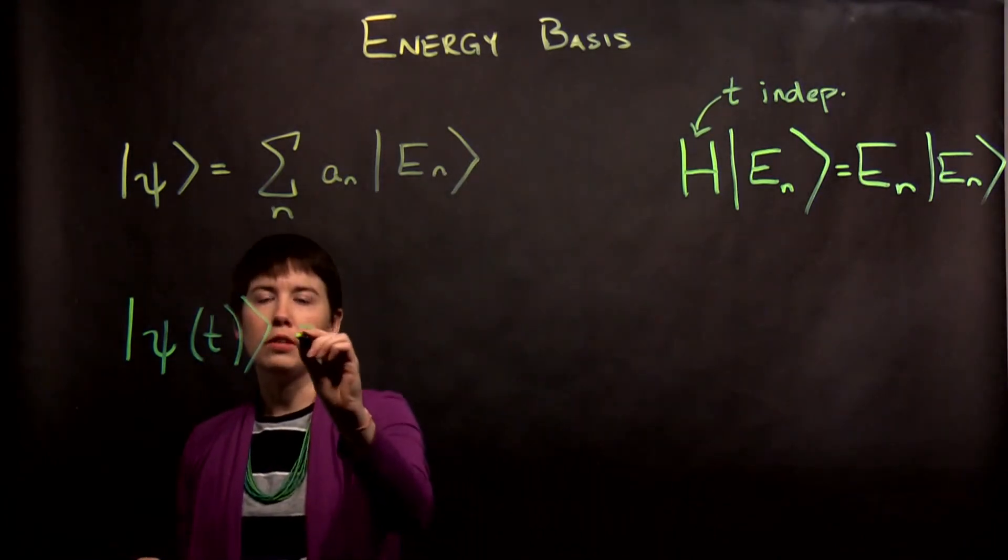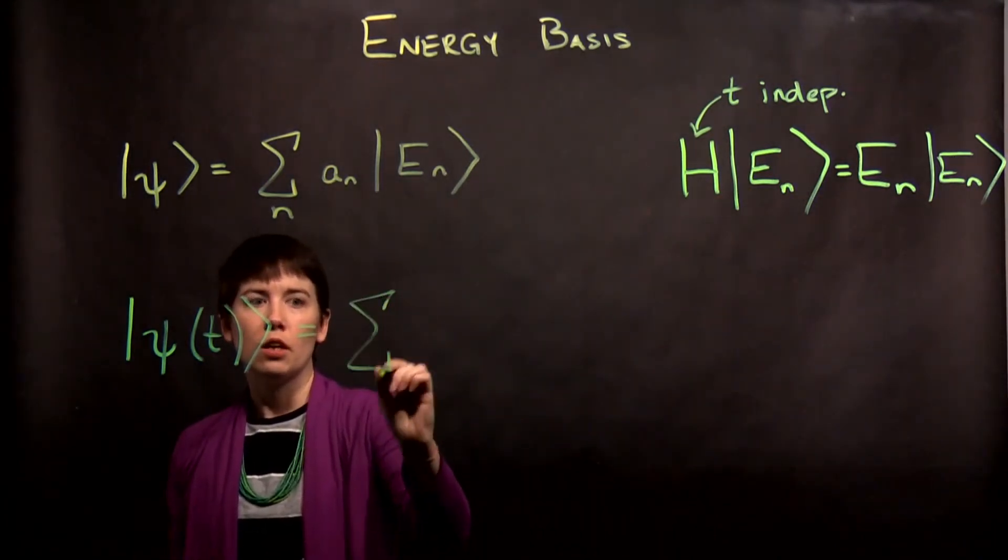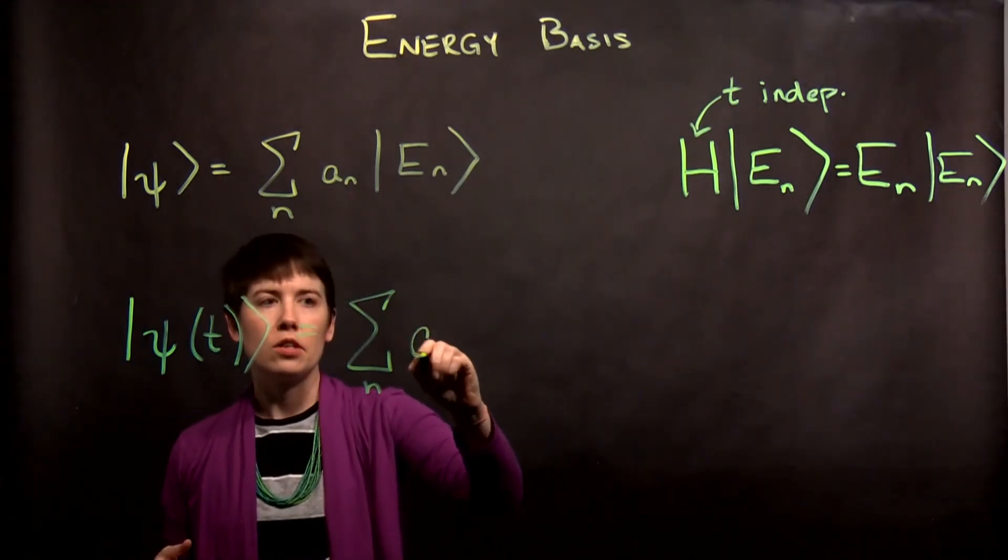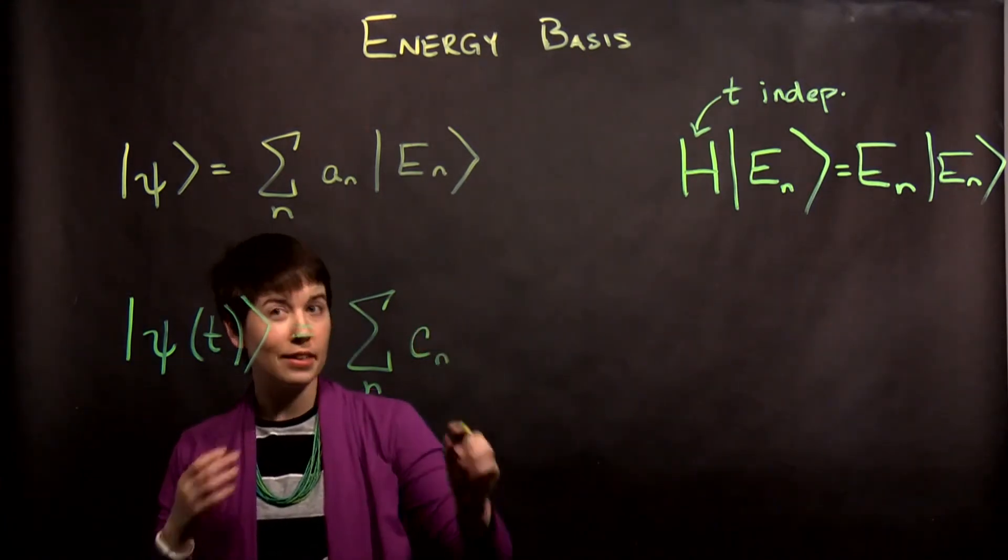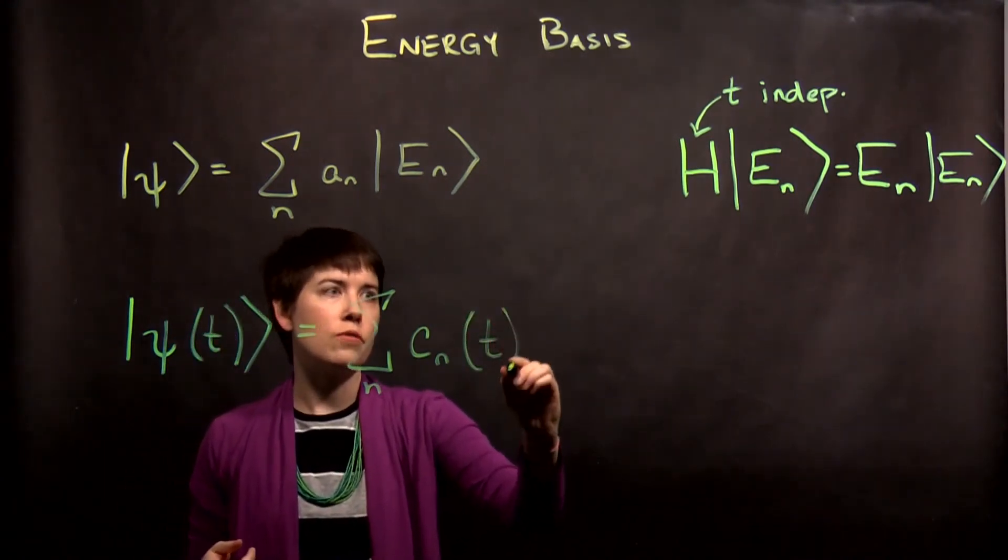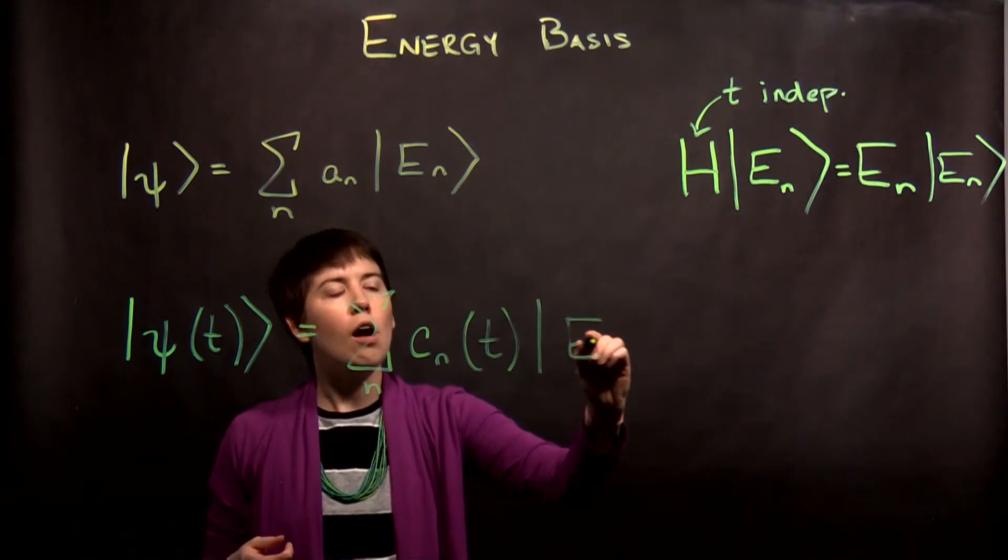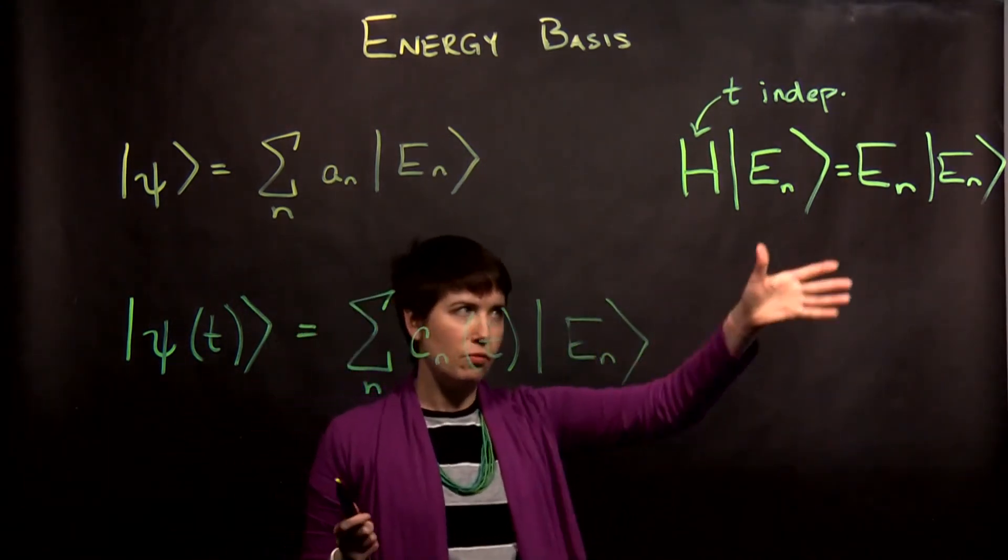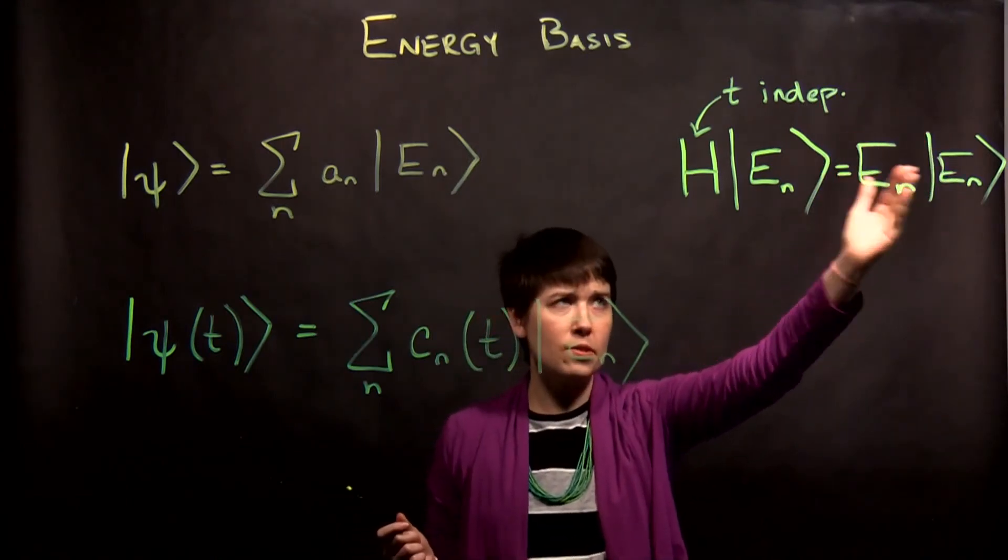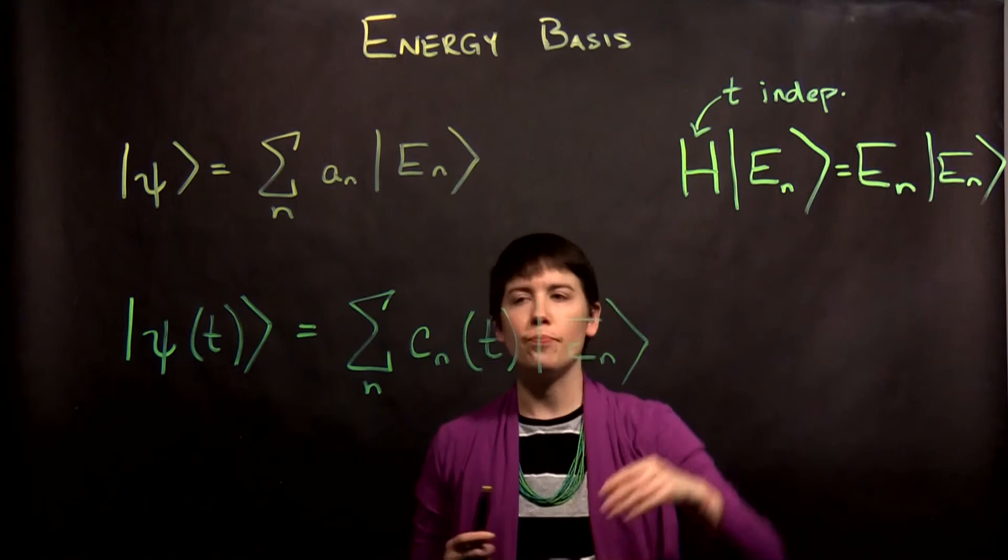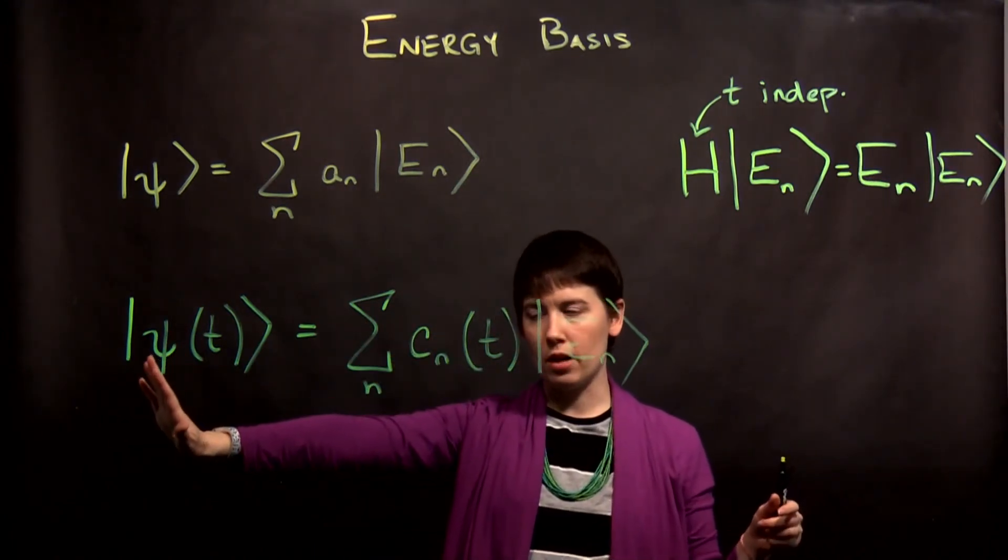What that will look like is we have some coefficient, and the reason I'm calling it C is to think complex. This will be a function of time, but our eigenvectors themselves won't be. So if this is time independent, we expect this to be time independent.